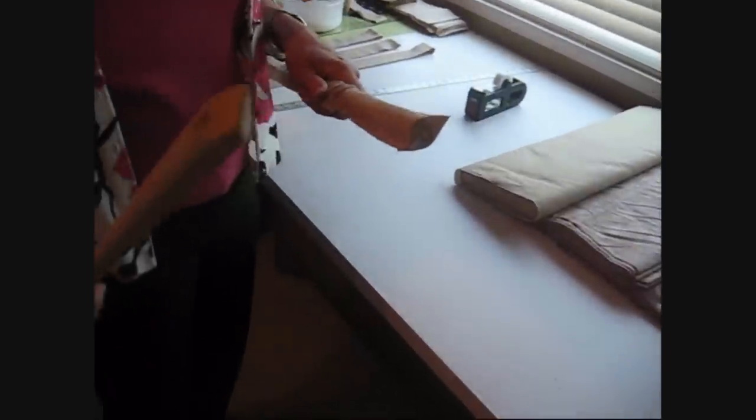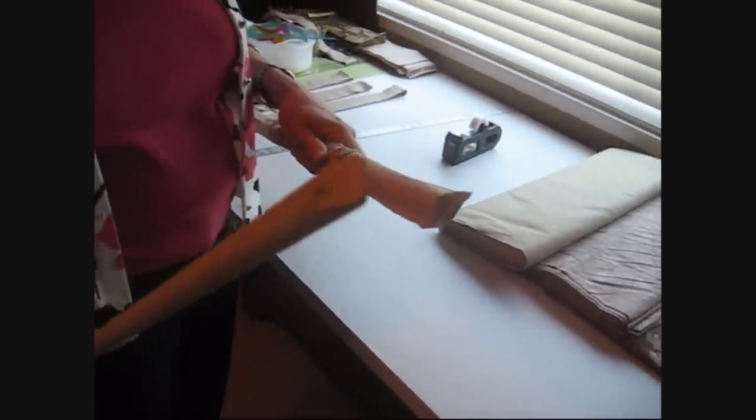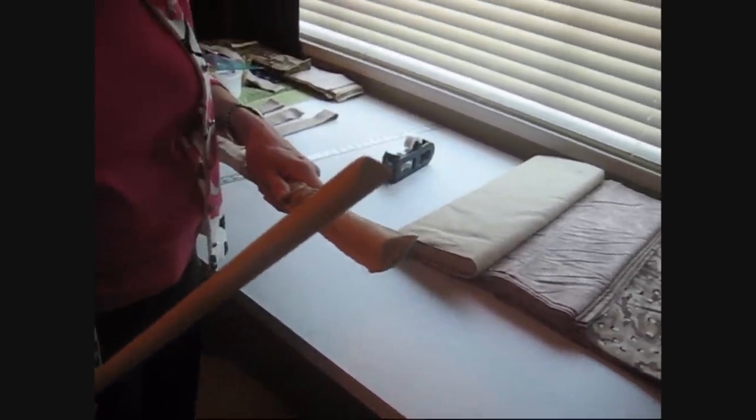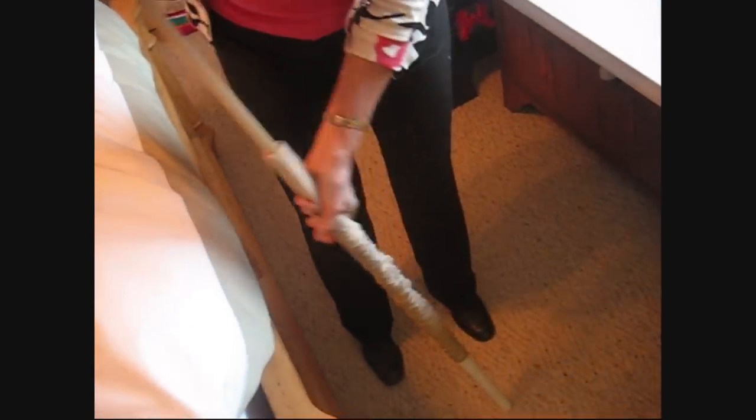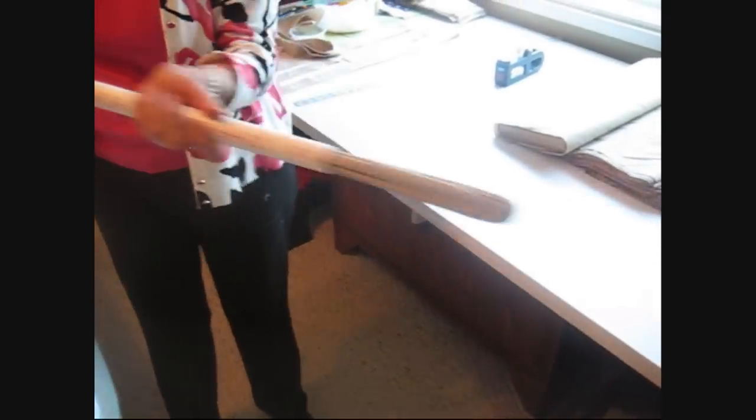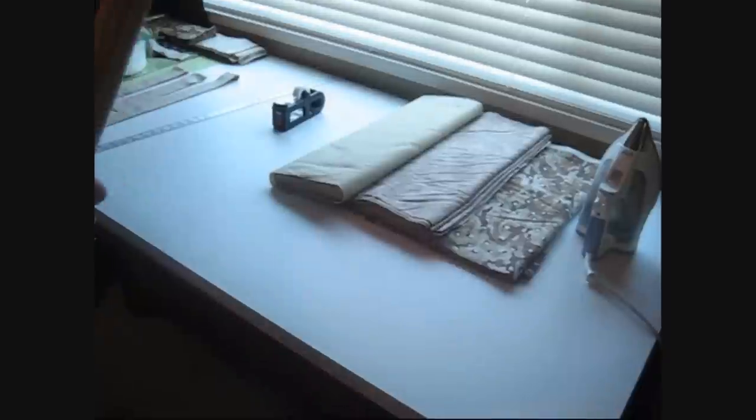The wooden dowel, you'll see I have put a small chisel point on the end of the dowel. You want to take that end, put it into the tube, and push the scarf through. Out the other end, and voila! You have turned your tube right side out.